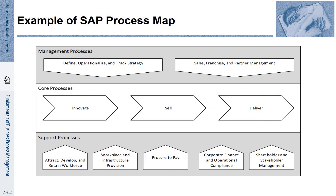Let us compare this with a second example. Here you see the process map — that is the process landscape model — of SAP, a major software vendor of enterprise software. They take a very abstract perspective on their processes. SAP distinguishes management, core and support processes, and they formulate only one core process.